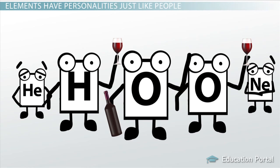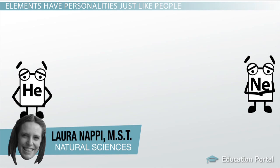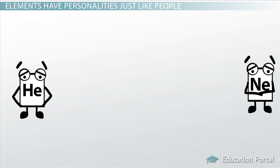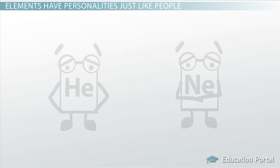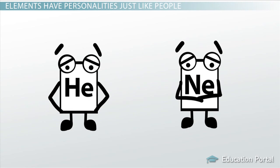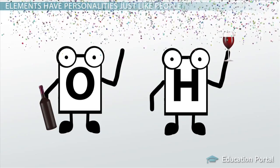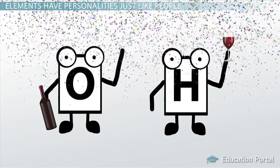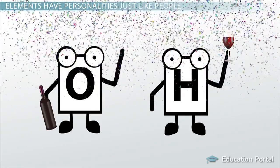Did you know that elements are like people and have different personalities? A few elements are very shy and love to be left alone, while others are extremely social and prefer to hang out with friends. Helium and neon are examples of elements that prefer to hang out alone. However, most elements, like oxygen and hydrogen, are social and prefer to hang out together. In this lesson, we will discuss how elements build molecules and compounds.